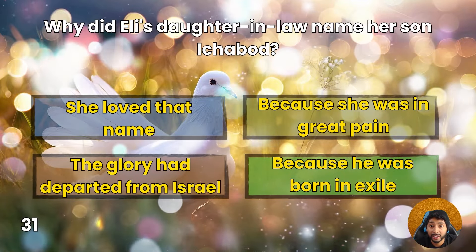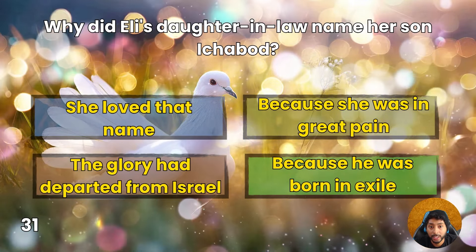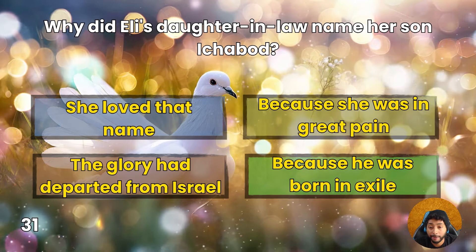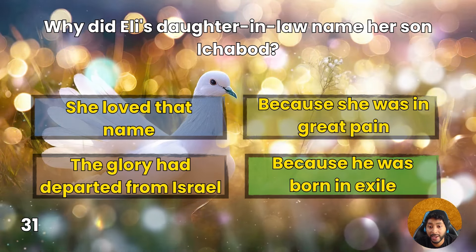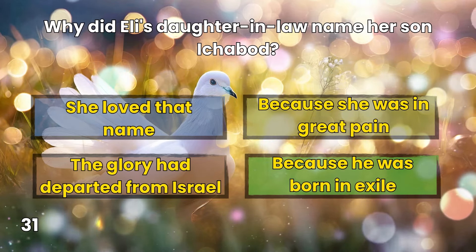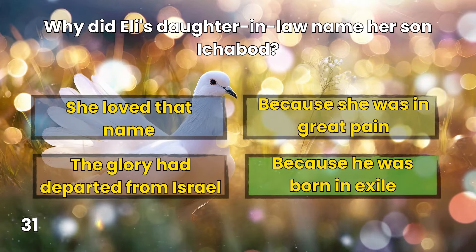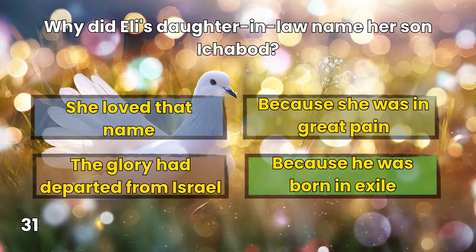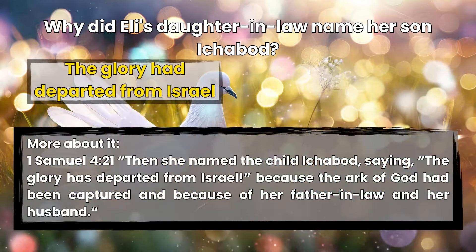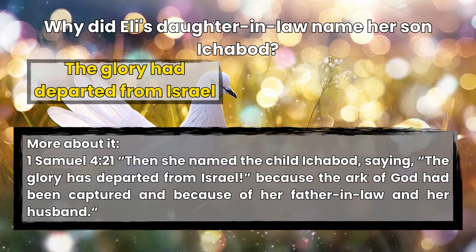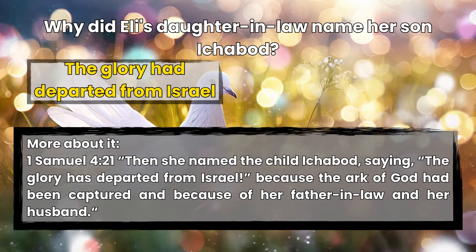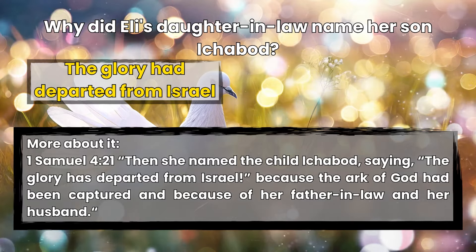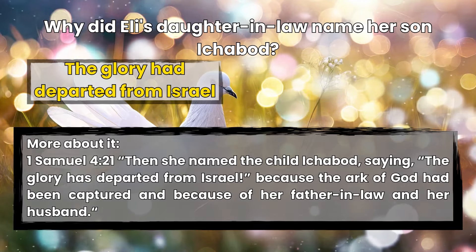Question 31: Why did Eli's daughter-in-law name her son Ichabod? She loved that name, because she was in great pain, the glory had departed from Israel, or because he was born in exile? The glory had departed from Israel. 1 Samuel 4:21 — Then she named the child Ichabod, saying, 'The glory has departed from Israel,' because the ark of God had been captured and because of her father-in-law and her husband.